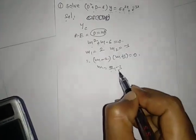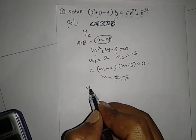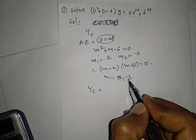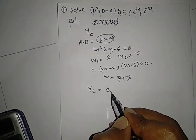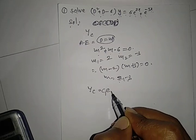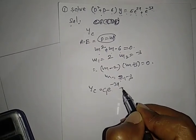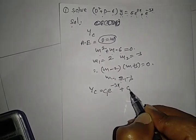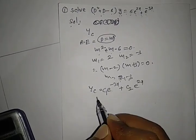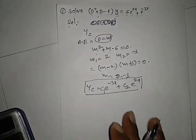These roots are real and distinct. So the complementary function is yc = c1·e^(-3x) + c2·e^(2x).